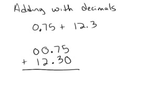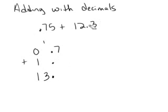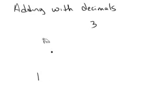And I go ahead and add: 5 plus 0 is 5, 7 plus 3 is 10, carry the 1, bring my decimals straight down, 1 plus 2 is 3, and 0 plus 1 is 1. And there's my answer. And it works exactly the same way if I want to subtract decimals.